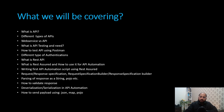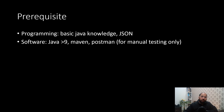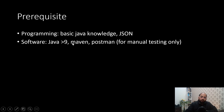For prerequisites, you should have basic Java knowledge — such as how to create a class and object — and some understanding of JSON, including JSON objects and JSON arrays. You should have Java version 9 or higher installed, Maven installed, and environment variables set up for both Java and Maven. For manual testing purposes, you can download Postman or any HTTP client, but I will be using Postman to hit API requests manually.